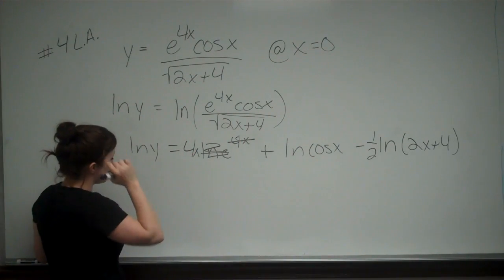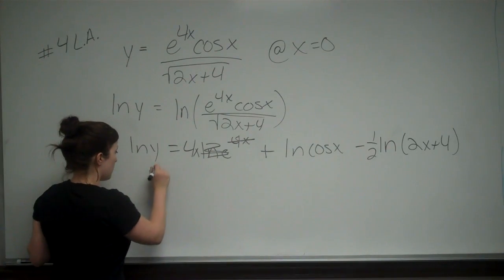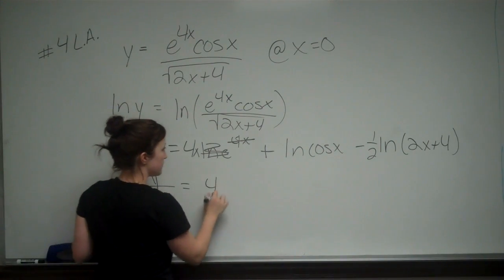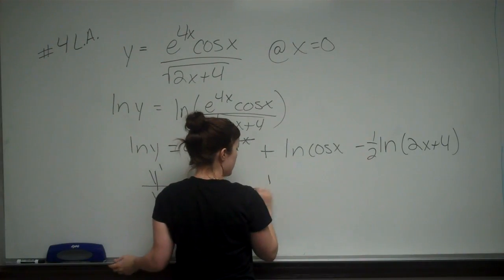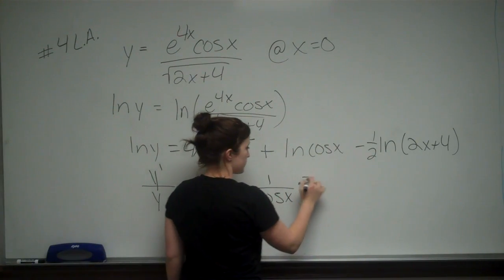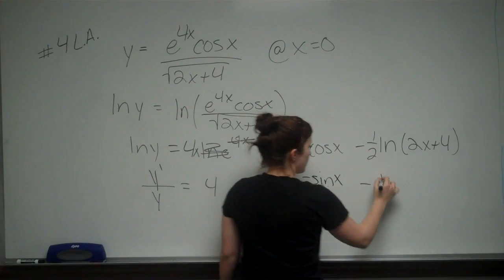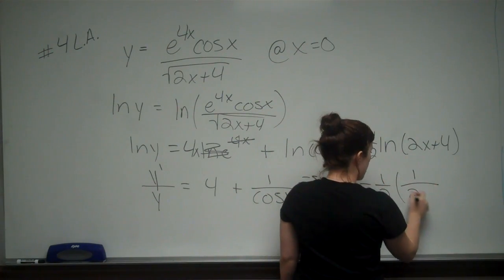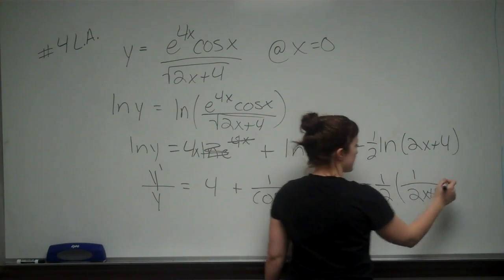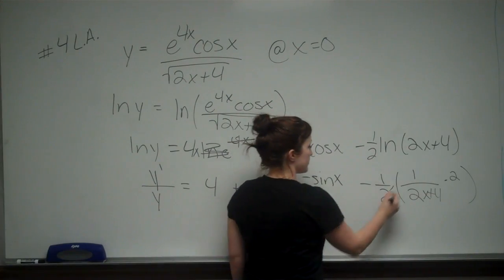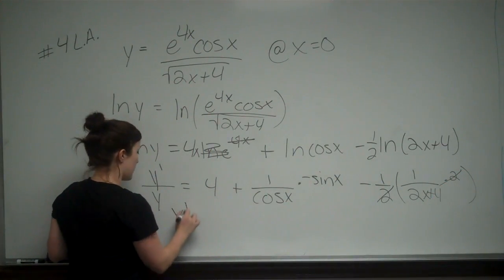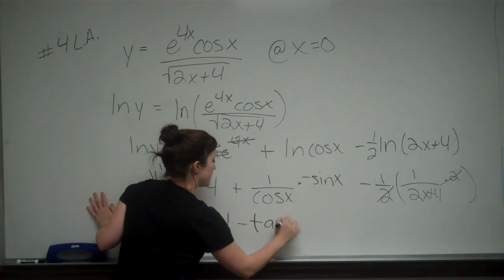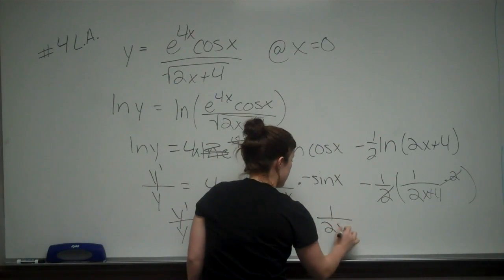Now we're going to differentiate. The derivative of ln of y is y prime over y, which equals the derivative of 4x, which is just 4, plus the derivative of ln of cosine x, which is 1 over cosine x times the derivative of cosine x, which is negative sine x. Then minus one half times the derivative of ln of 2x plus 4, which is 1 over 2x plus 4 times 2. We can cancel those 2s, giving us y prime over y equals 4 minus sine x over cosine x — that's tangent x — minus 1 over 2x plus 4.